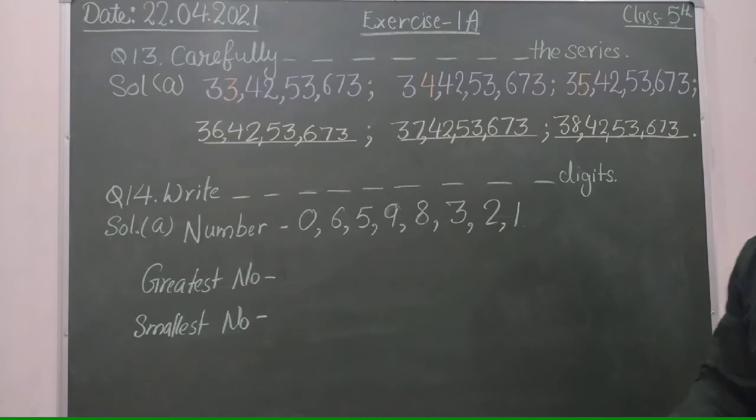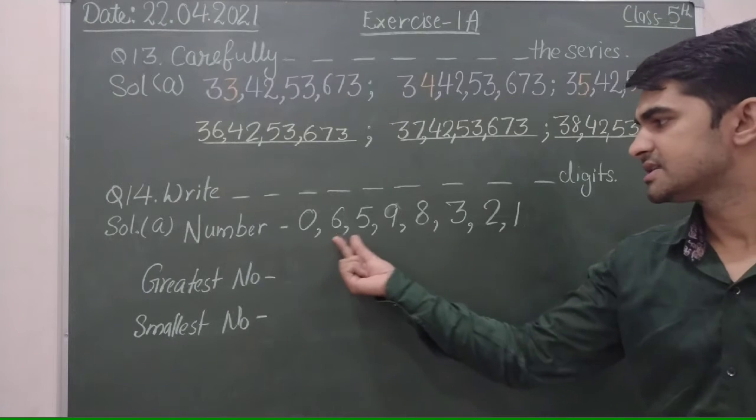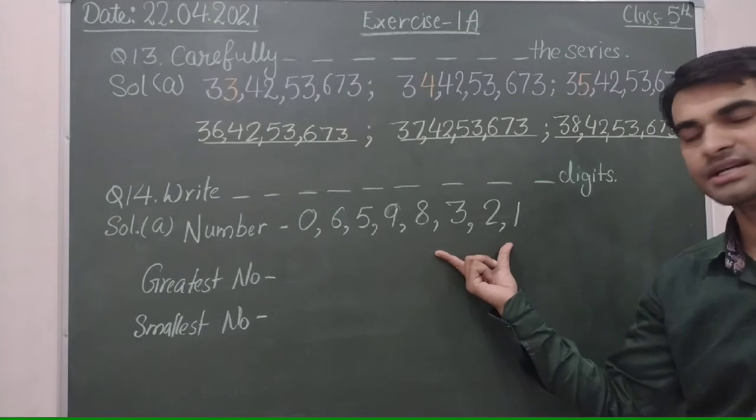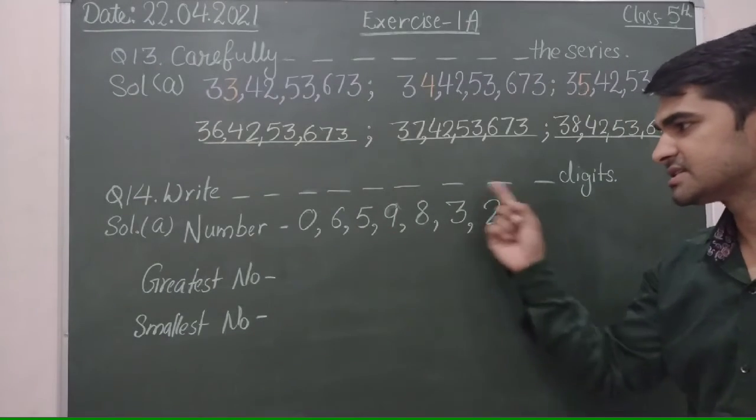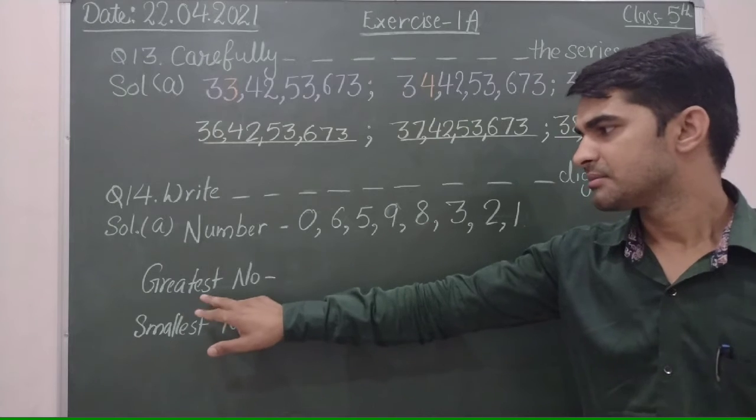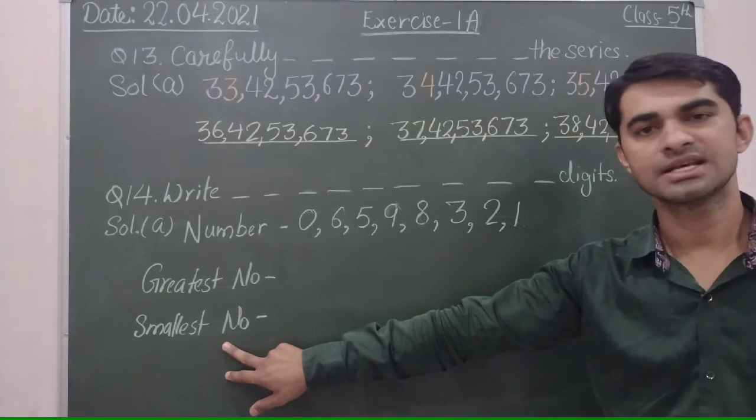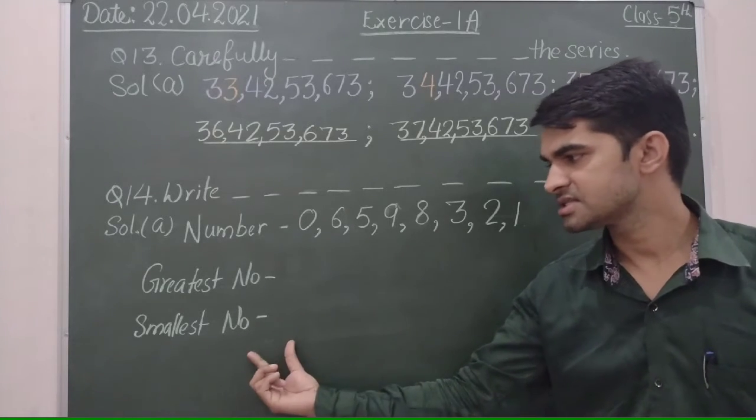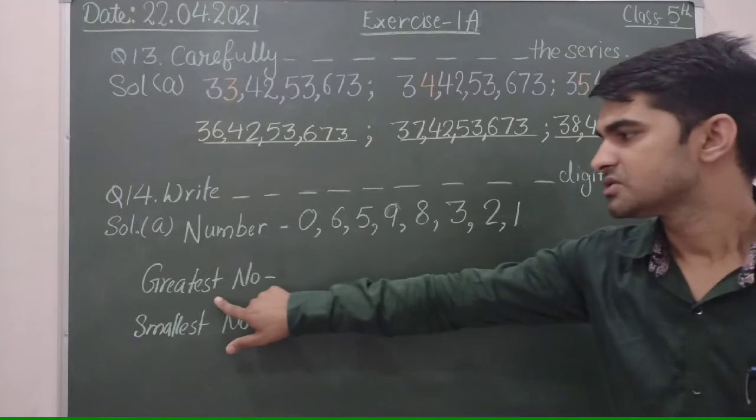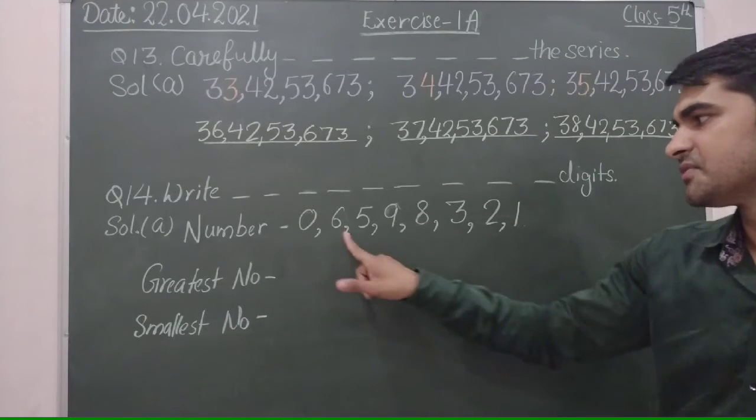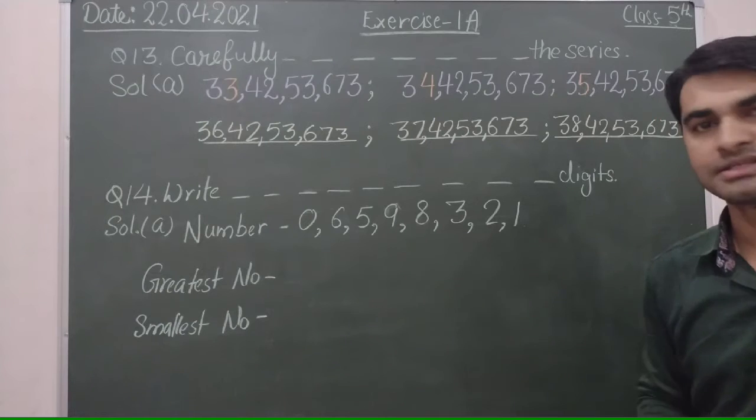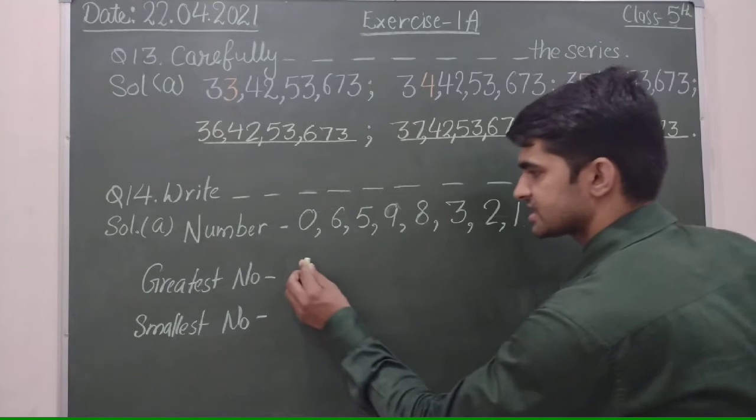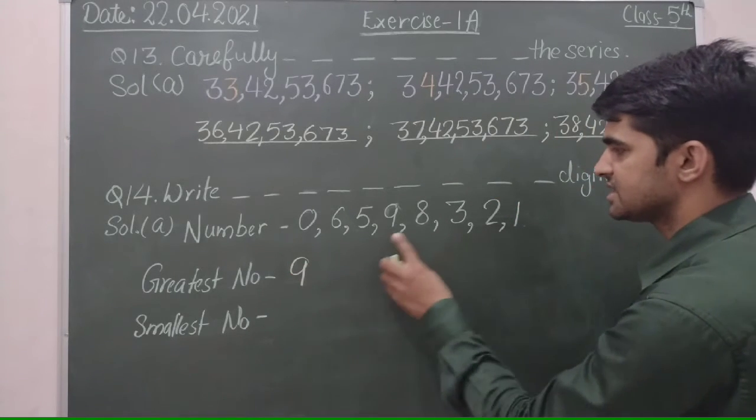Question number 14: different digits are given. So here eight different digits are given and from these digits we will make greatest number and smallest number. To convert the greatest number, firstly we will check the greatest digit. So we will firstly write 9, then after this smaller 8.